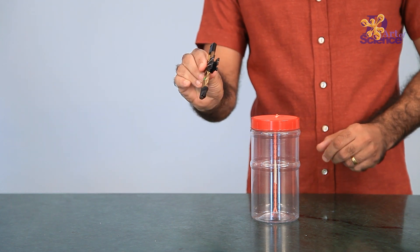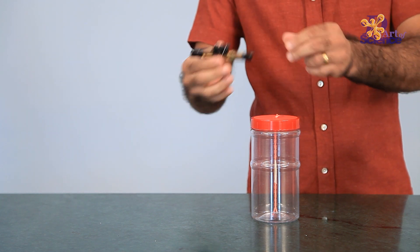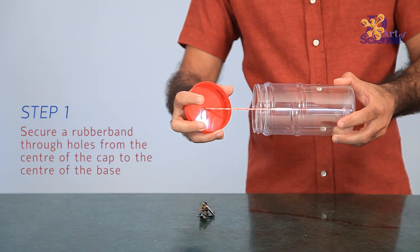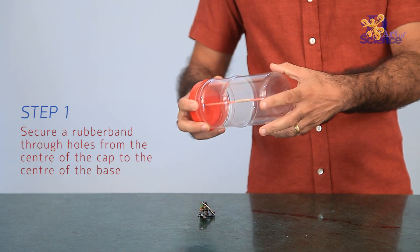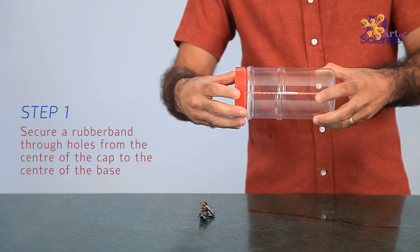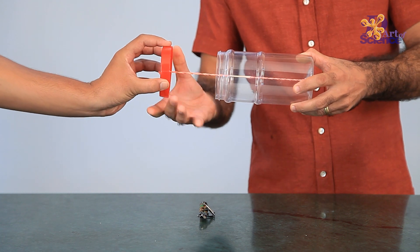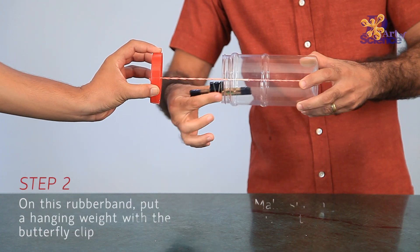Because when we twist the rubber band, the energy is stored as potential energy. And when it starts moving, the energy stored turns into kinetic energy. And it is because of this elasticity that it starts moving in the opposite direction.